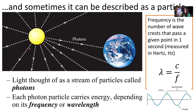Sometimes light can be described as a particle — this is the wave-particle duality of light. Light can also be thought of as a stream of particles called photons. Photons are individual packets of light, and each photon contains energy depending on the frequency of the wavelength. Frequency is the number of times a wave crest passes a given point in one second, measured in units of hertz (Hz).